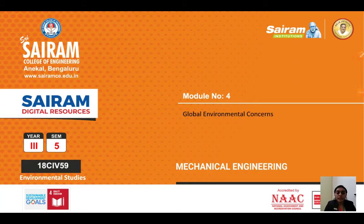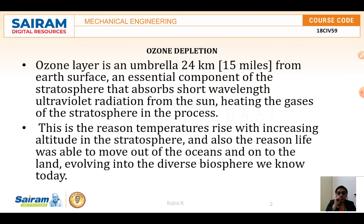In this session we are continuing with Module 4, that is global environmental concerns. Today's topic is ozone depletion. The ozone layer is a kind of an umbrella of 24 kilometers, that is about 15 miles from Earth's surface — an essential component of the stratosphere that absorbs short wavelength ultraviolet radiation from the Sun, heating the gases of the stratosphere, enabling life to evolve from the ocean on to land into the diverse biosphere we know today.